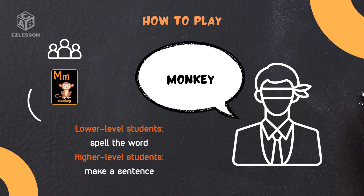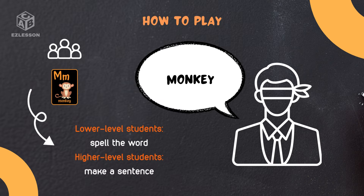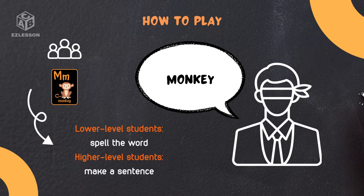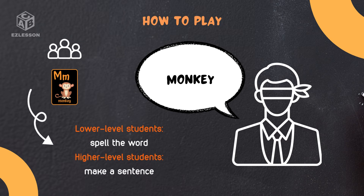For lower-level students, they might spell the word out loud, while higher-level students can make a sentence, like, 'The monkey loves to eat bananas.' This approach allows students of various levels to engage with the vocabulary effectively, either reinforcing spelling skills or practicing sentence construction.